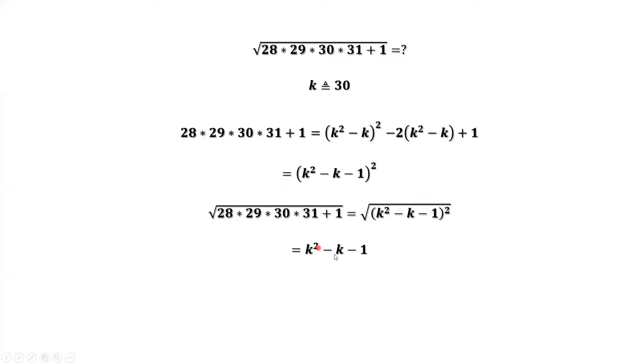We can derive the final answer. Replace k by 30. That's 30 square minus 30 plus 1. Continue to simplify this. We can get the final answer. This is the final answer.